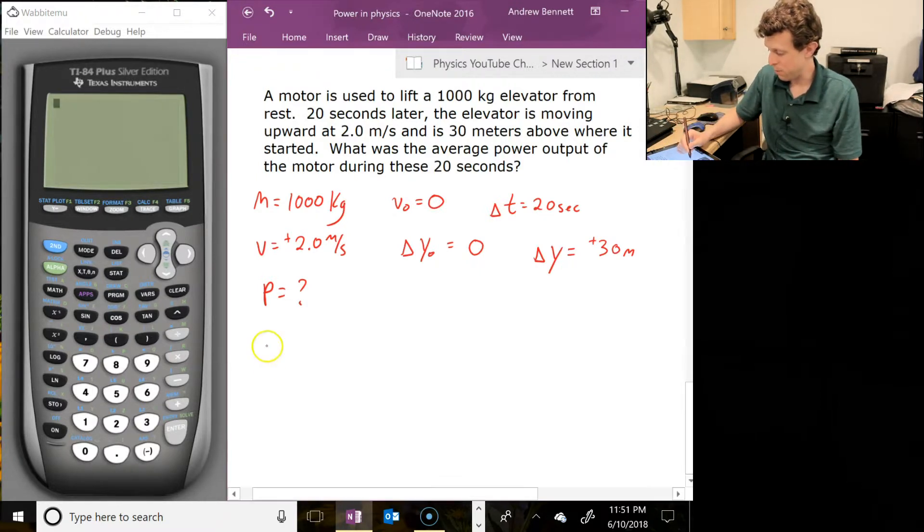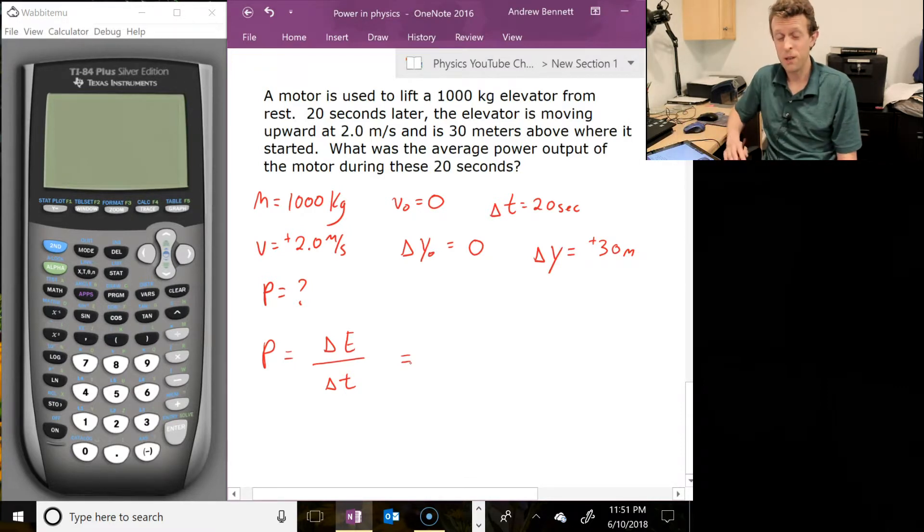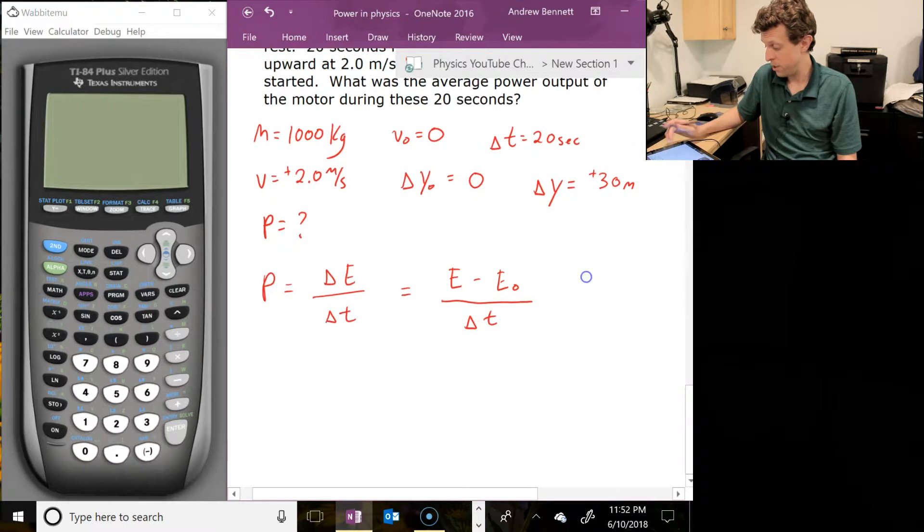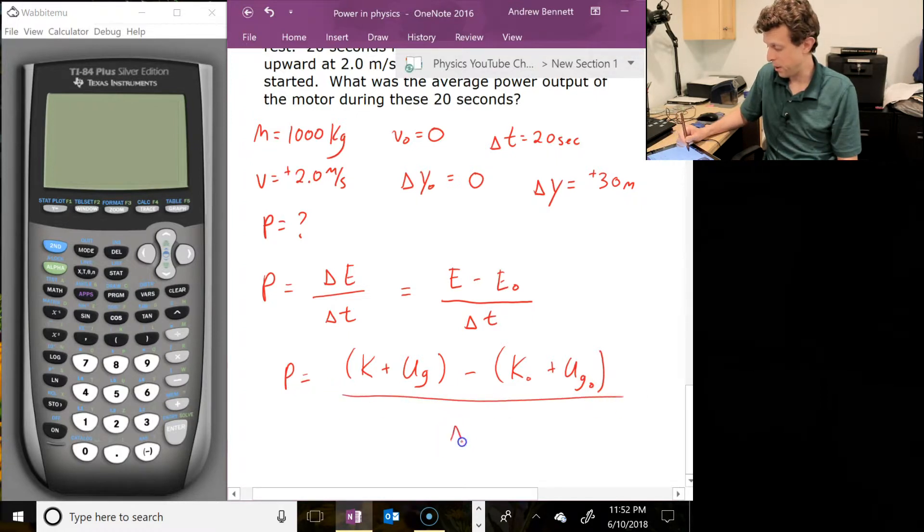So our equation then is going to be P is equal to delta E over delta T. Now in this case, our starting energy and our ending energy are going to be combinations of potential and kinetic energy. So I'm just going to go ahead and write this out as E minus E-naught divided by delta T. So our ending minus our starting energy. And then in the next line, I'm going to show that that starting energy is composed of both kinetic and gravitational potential energy.